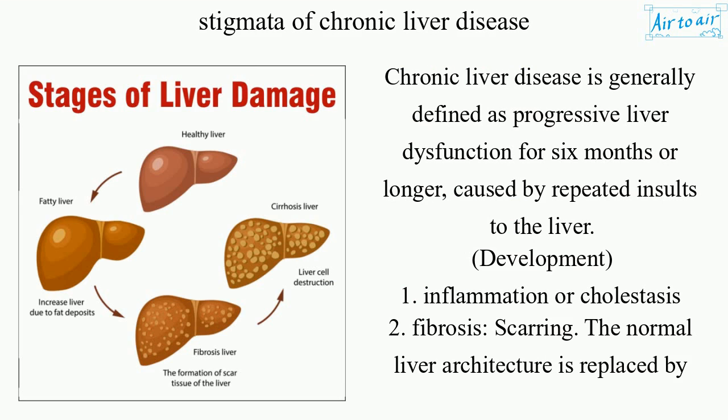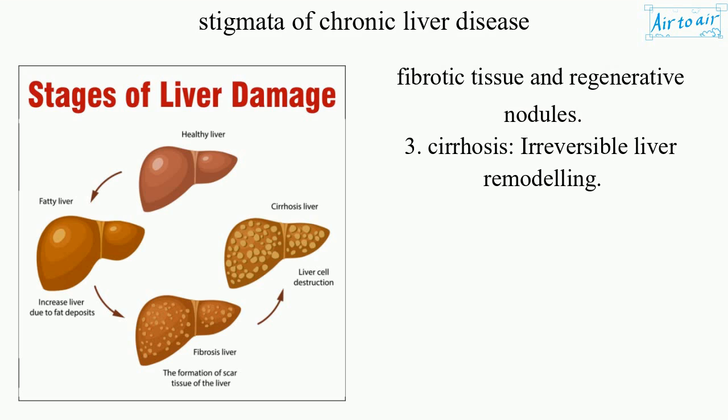The development of chronic liver disease involves three stages: 1. Inflammation or Cholestasis. 2. Fibrosis and Scarring, where the normal liver architecture is replaced by fibrotic tissue and regenerative nodules. 3. Cirrhosis, which is irreversible liver remodeling.